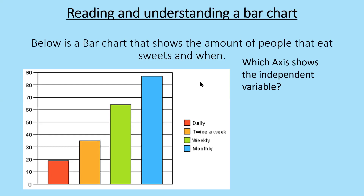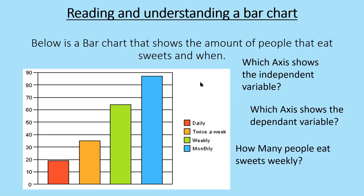The independent variable is on the x-axis — well done to anyone who got that right. The dependent variable must therefore be on the y-axis. For the third question — how many people eat sweets weekly? We go to the key: green is weekly. Looking at the green bar, its top is in between 60 and 70, just below the midpoint, so about 63 or 64 would be acceptable.